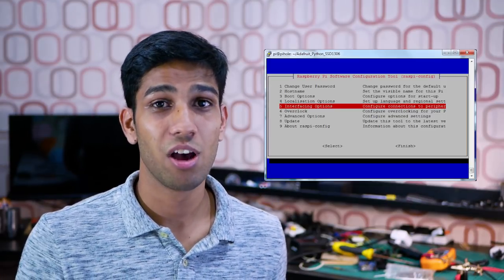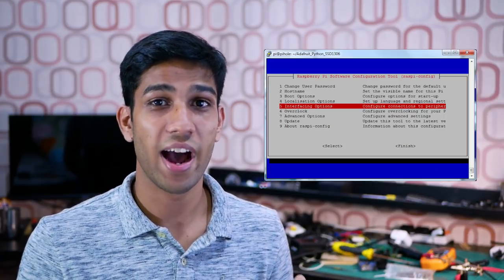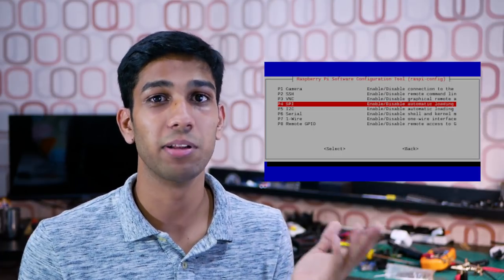So lastly, before we end this video, let's talk about how we can integrate SPI into our Arduino or Raspberry Pi powered projects. First, let's talk about the Raspberry Pi implementation. For the Raspberry Pi, you have to go into raspi-config and into interfacing options and then enable SPI.